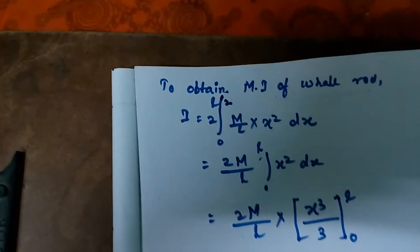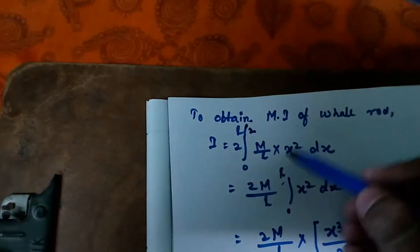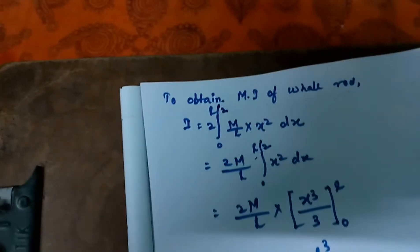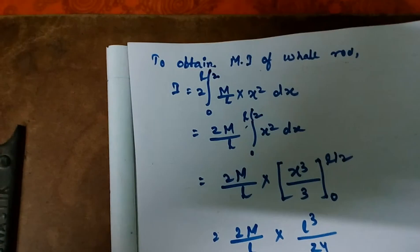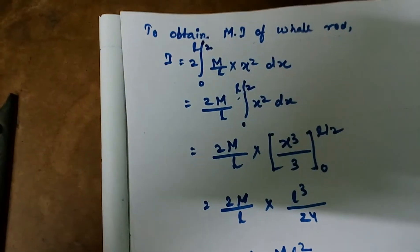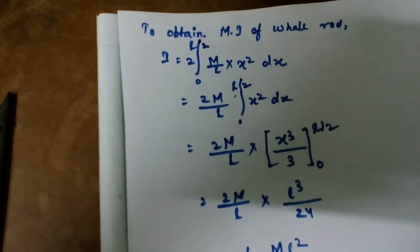Integrating it, we get 2M by L times L cubed by 24.